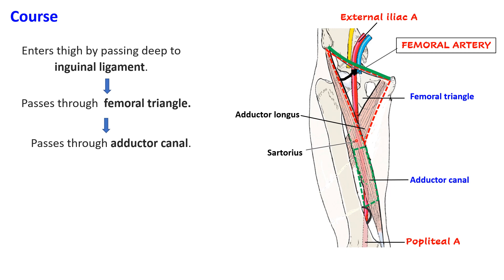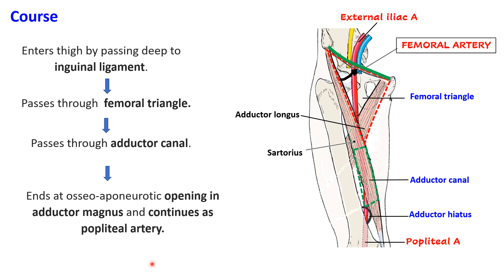It enters the adductor canal here and, as already mentioned, ends at the osteo-aponeurotic opening in the adductor magnus and continues as the popliteal artery.